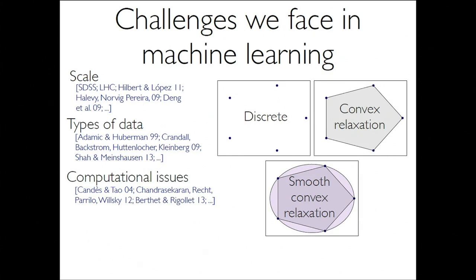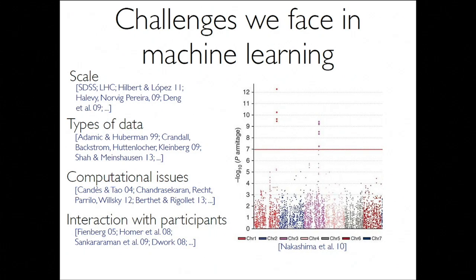We face computational issues — computational hardness. We want to compute things very efficiently. As we collect more data, the sort of interaction that our algorithms force upon participants — privacy compromises, things like that — start to come up. In 2008, Nils Homer and colleagues showed that just by using count data in genomics, you could figure out who belonged to different medical studies. This caused the NIH to stop releasing data for a while, and that's a problem because we need that data.